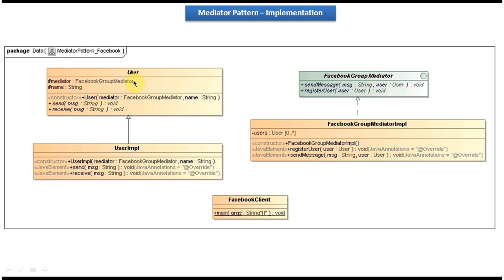The User class is an abstract class. It has two abstract methods: send and receive. These methods are implemented by the concrete class UserImpl. The send method sends the message to the particular Facebook group, and the receive method is used to receive messages from the Java group or any group which the user has registered. Using FacebookClient, we can test these classes. Now we will open Eclipse and I will show you the code.